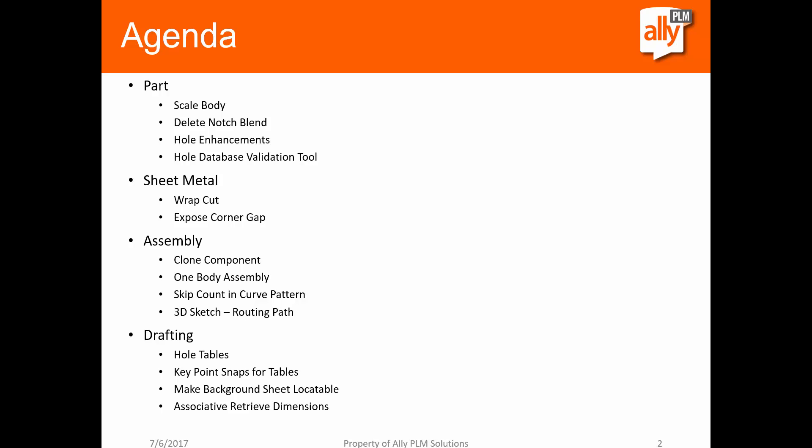And then finally in drafting, we'll take a look at some new options in the hole tables, some extra functionality to snap to key points for tables and other callouts and annotations, and how to make retrieving dimensions associative back to the part file. We're going to focus on the core functionality in part one. In part two, we'll look at add-on functionalities like generative design, reverse engineering, simulation with Flow EFD, and technical publications.